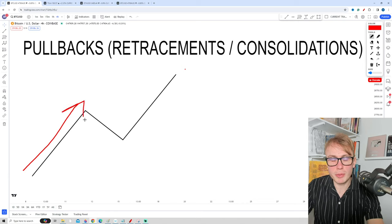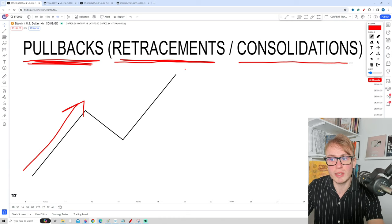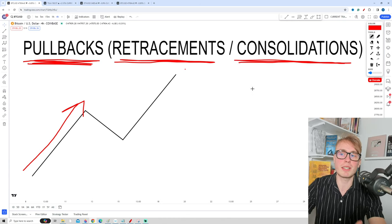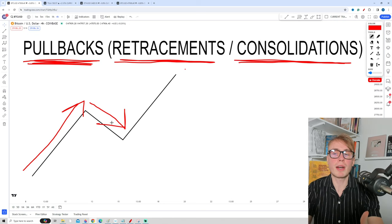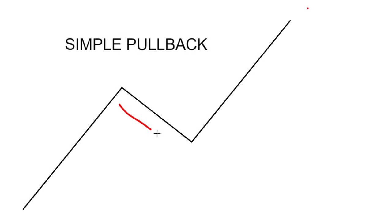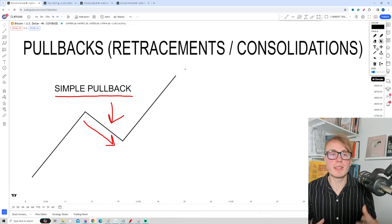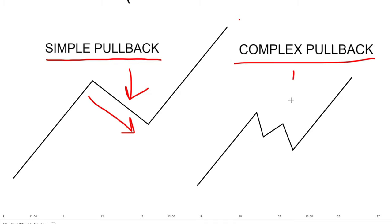Now we've talked quite a bit about impulsive moves. Something that is at least as important is to understand pullbacks, also called retracements or consolidations. I think consolidations describes pullbacks pretty well, because the pullback is basically a period where the price needs to consolidate the energy from the preceding impulsive move. When we see a clean pullback — simply just a line in the opposite direction — this is what we call a simple pullback. But unfortunately it's not always this easy, because many times you will see pullbacks that look more complex. This is what we call a complex pullback.